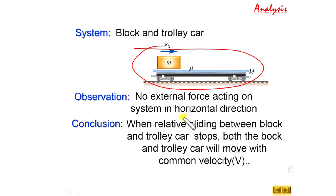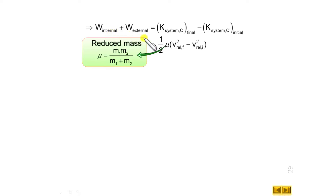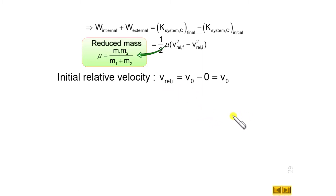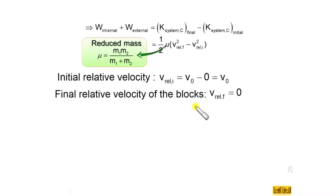Let this common velocity be capital V. Now let us write the work-energy theorem: work done by the internal force plus work done by the external force equals the final kinetic energy with respect to the centre of mass minus the initial kinetic energy of the system with respect to the centre of mass. Initially, velocity given to the block is V0 and the trolley was at rest, so the initial relative velocity between the block and trolley equals V0 minus 0, which is V0. When relative sliding stops, the relative velocity final equals 0. Since no external force acts on the system, work done by external forces equals 0.